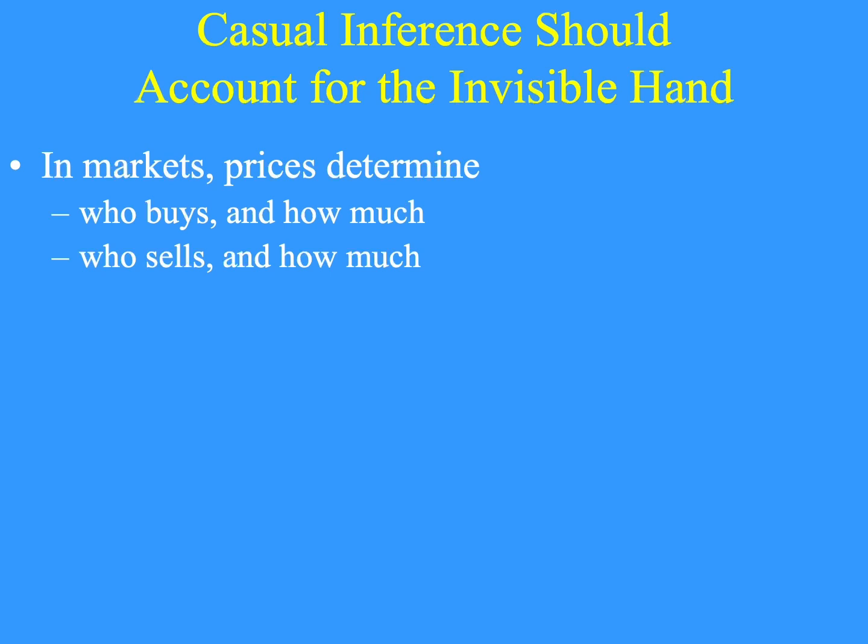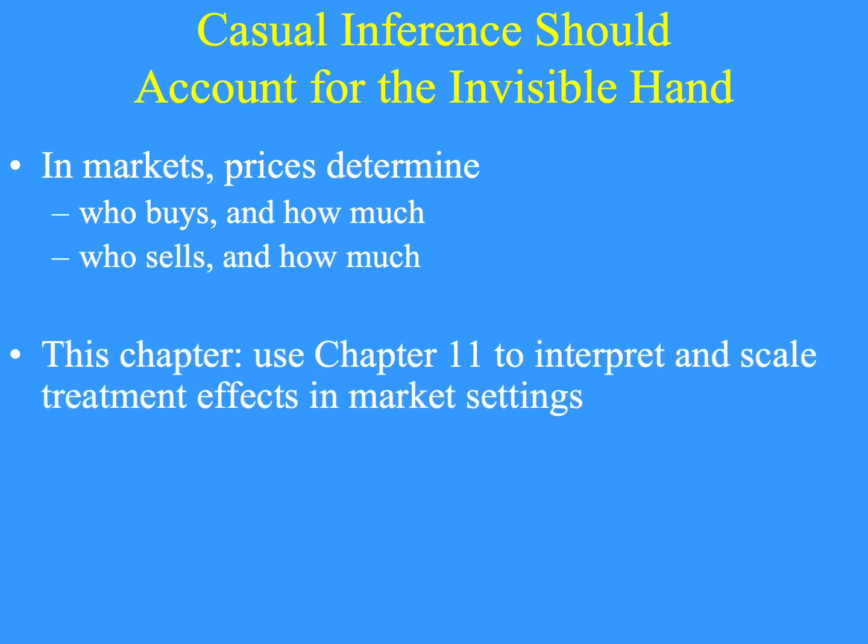Of course, econometrics has simultaneous equations, particularly that the quantity supplied must equal the quantity demanded. But that is beside our point. Markets also coordinate buyers with other buyers, even those who never meet or communicate with each other — same on the seller's side. We will show that the invisible hand effects are easy to deal with.